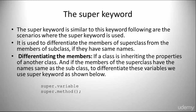Now let's move over to the super keyword. The super keyword is similar to this keyword, and the following are the scenarios where the super keyword is used. It is used to differentiate the members of a superclass from the members of a subclass if they have the same names. We also have the ability to differentiate the members if a class is inheriting the properties of another class, and if the members of the superclass have the same names as the subclass. To differentiate these variables, we use the super keyword as shown below.